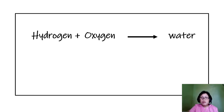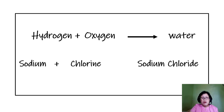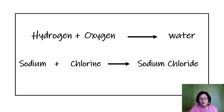For example, hydrogen plus oxygen combines to result in water. Hydrogen and oxygen are gases, but water is liquid — the combination produces a substance different from both. Similarly, when you combine sodium and chlorine, they produce sodium chloride. Sodium is a metal and chlorine is a poisonous gas, yet their combination results in salt — something we eat every day. That is the magic of chemistry: in a chemical reaction, new substances with new properties are formed.